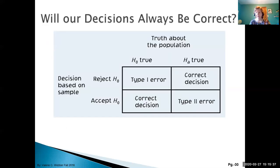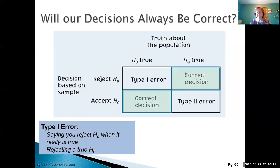There are types of errors associated with our decisions — we're not always going to be correct. We have two types of errors. In this table, we have the truth about our population: either the null hypothesis is true or the alternative is true. On the other side, we have our decision based on our sample: we've either rejected the null hypothesis or accepted it. If we accept the null hypothesis and it was actually false so the alternative was true, we also made a correct decision. The two quadrants we're more interested in are the Type I error and the Type II error. Type I is called our alpha error.